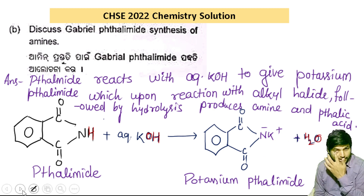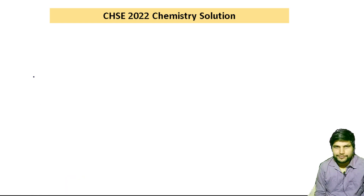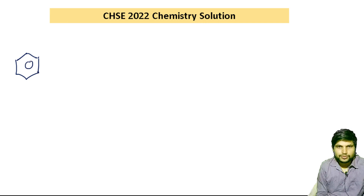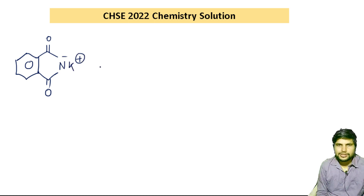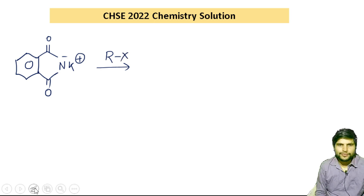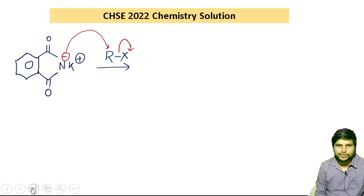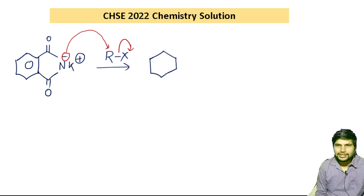This potassium phthalimide is then treated with alkyl halide. Potassium phthalimide has N minus K plus, and it will react with alkyl halide via nucleophilic substitution. The nucleophile attacks and the leaving group X minus leaves, so ultimately we get the corresponding N-alkyl phthalimide.